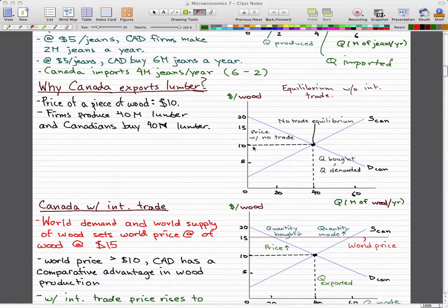The firms actually produce 40 million pieces of lumber, and Canadians actually buy 40 million pieces of lumber to match the amount that the firms produce.